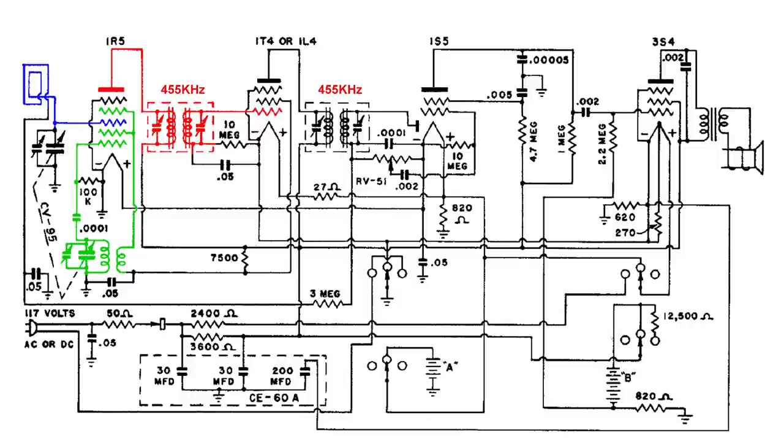The output of the first IF can is applied to the control grid of the 1T4 and that's the tube that I have in my set. It amplifies the signal and sends it over to the second IF can. And the secondary of that IF can is where we have the detector circuit.